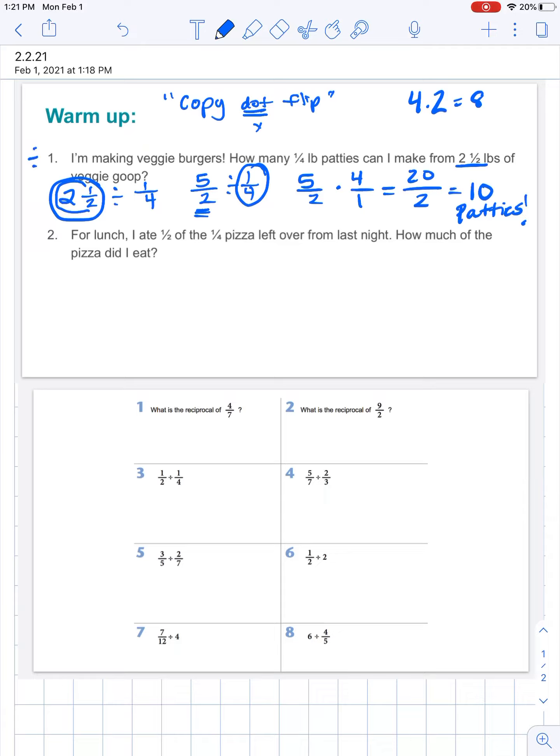For lunch, I ate half of the quarter pizza leftover from last night. How much of the pizza did I eat? Well, I know that I ate half of the quarter. That 'of' tells me that I am going to multiply. So I ate half of that quarter pizza. When we multiply, we just multiply straight across. One times one is one, two times four is eight. How much of the entire pizza did I eat? One eighth.